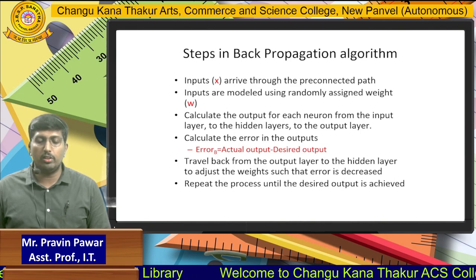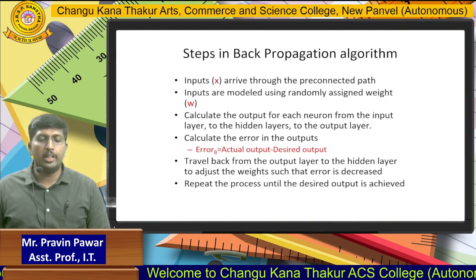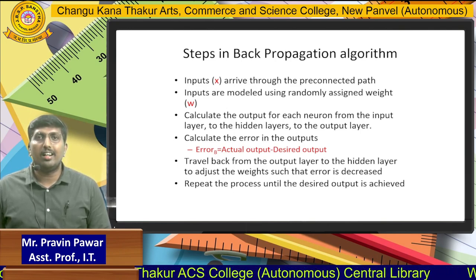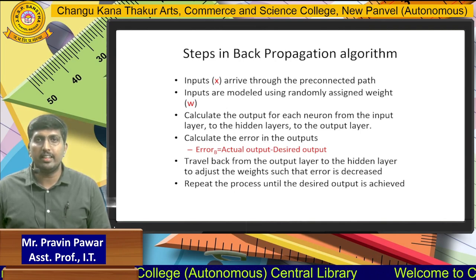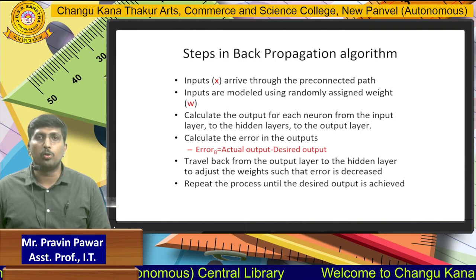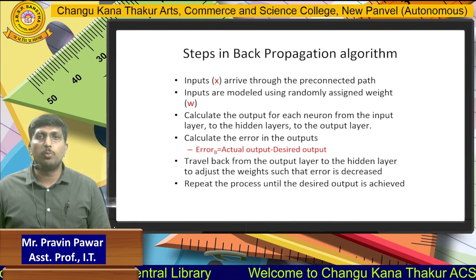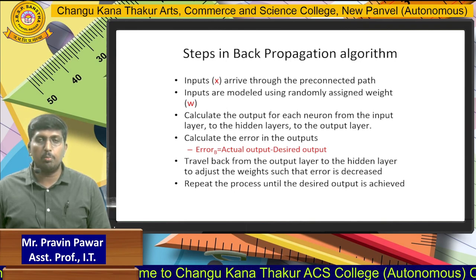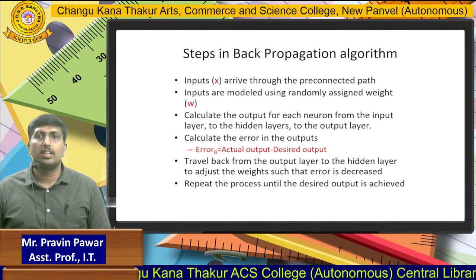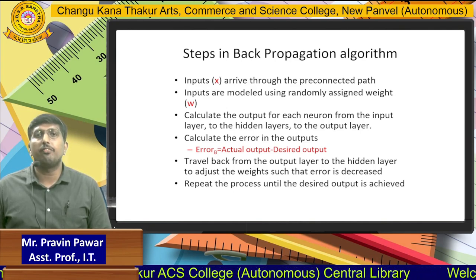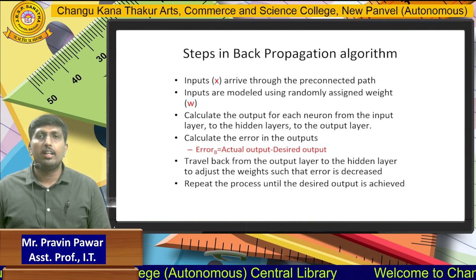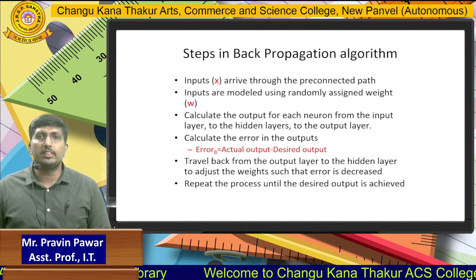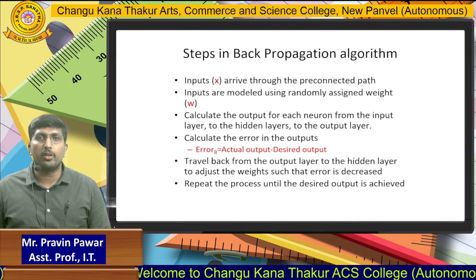We then calculate the output of each neuron from the input layer and provide it towards the hidden layer, which is the processing layer. That's why it is known as the hidden layer, and finally it generates the output. To calculate the error in the outputs, the formula is: error = actual output minus desired output. For example, if 10 is the final output we required and the actual output is 8, then 2 is the error.